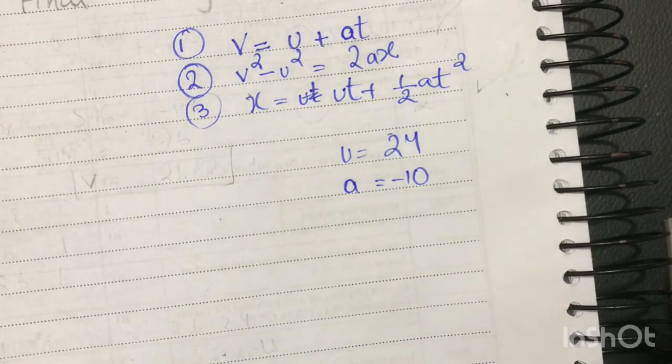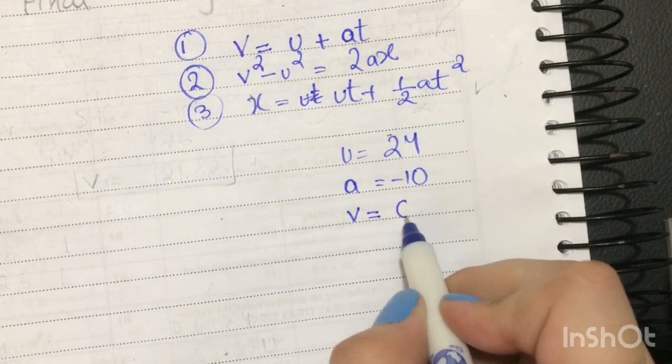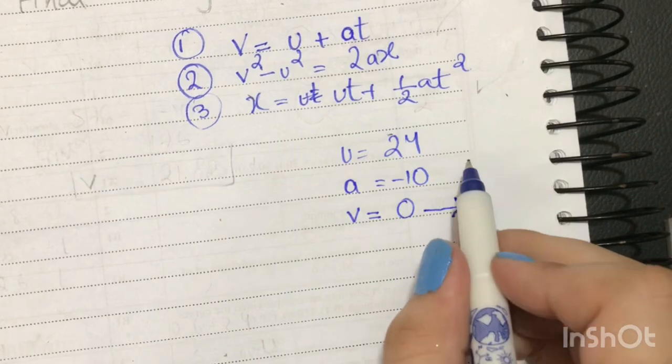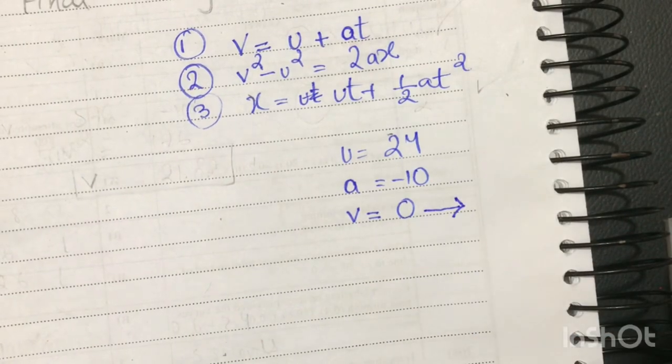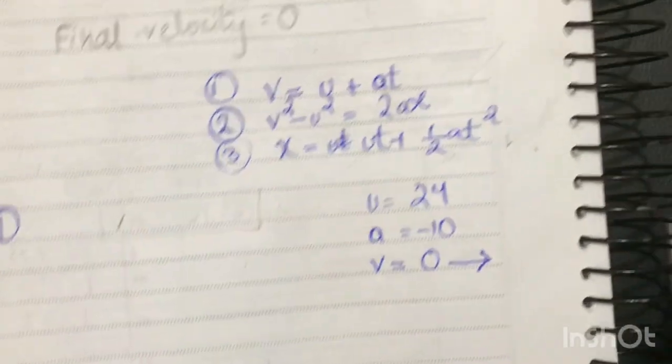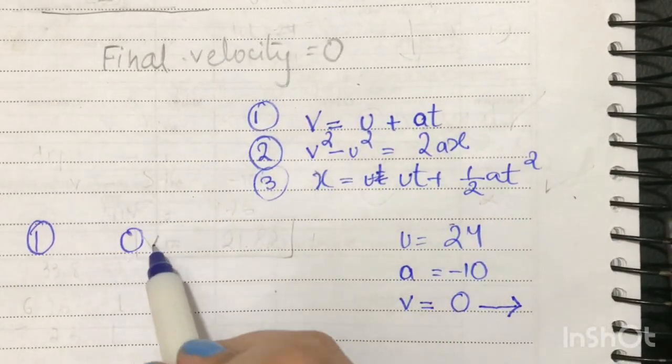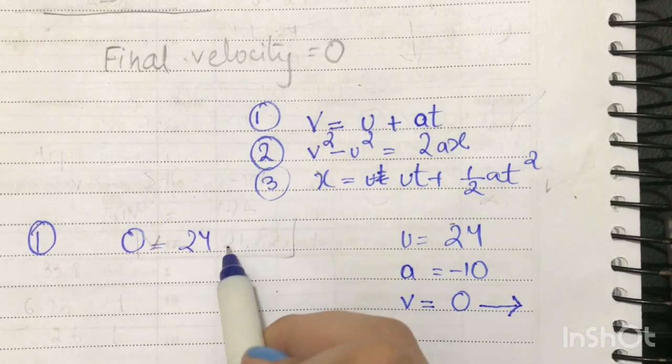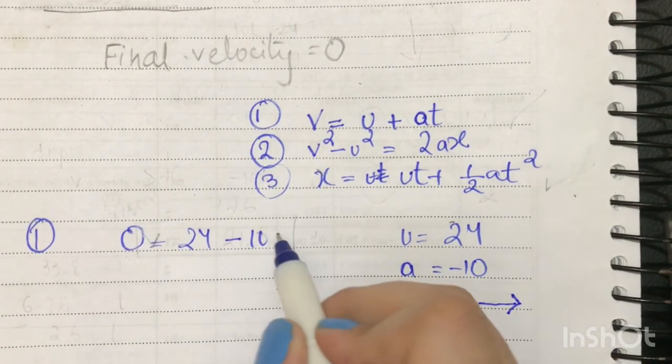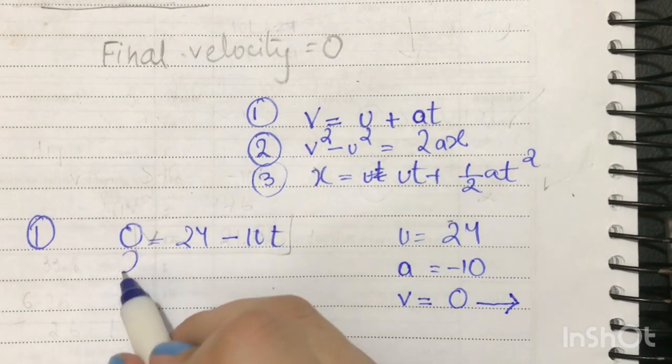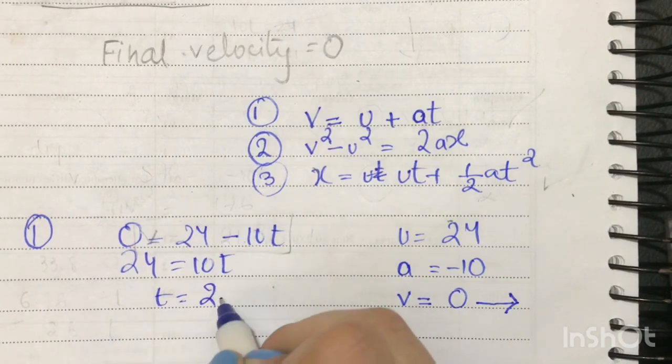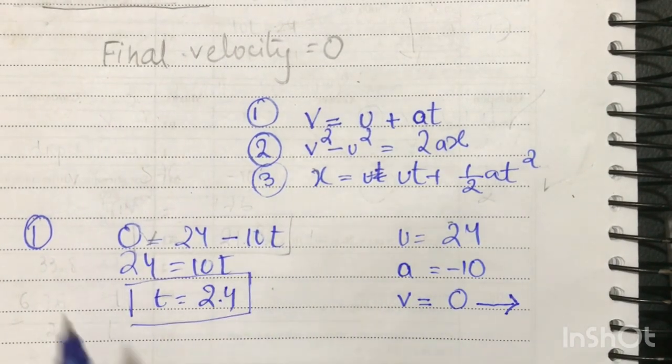So we can, and we also have the final velocity which we know is zero because this is the velocity the particle will reach when it reaches its maximum height. So we can use this formula: v equals u plus at. So this will become 0 equals 24 minus 10t, so 24 equals 10t, so the time is 2.4.